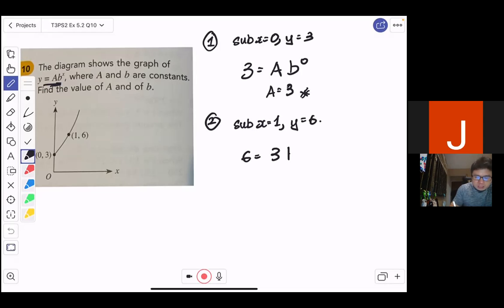b to the power of x, which is b power 1. Then straight away, you can see that 6 is equals to 3b, and b is equals to 2. That's it. Thank you.